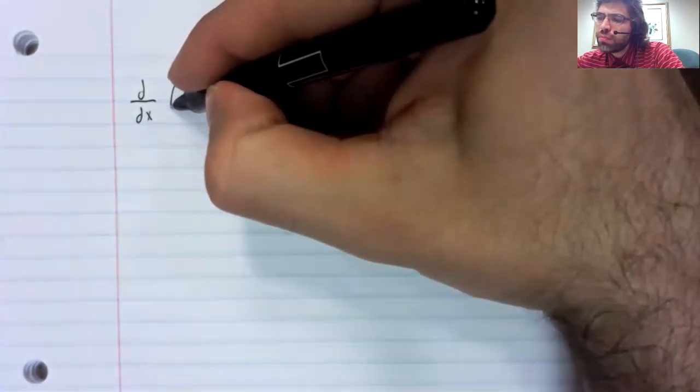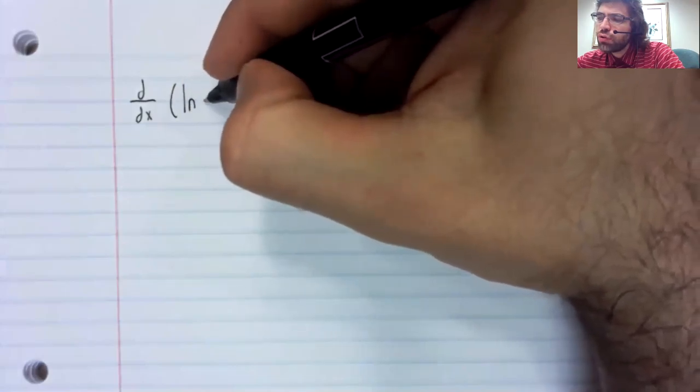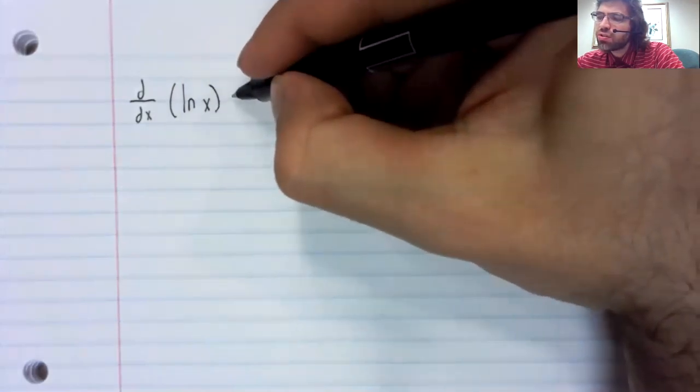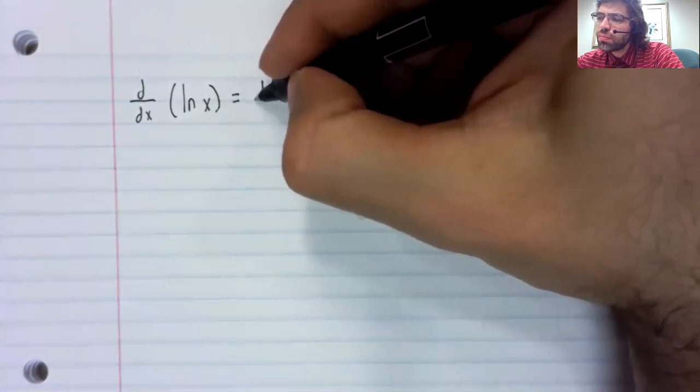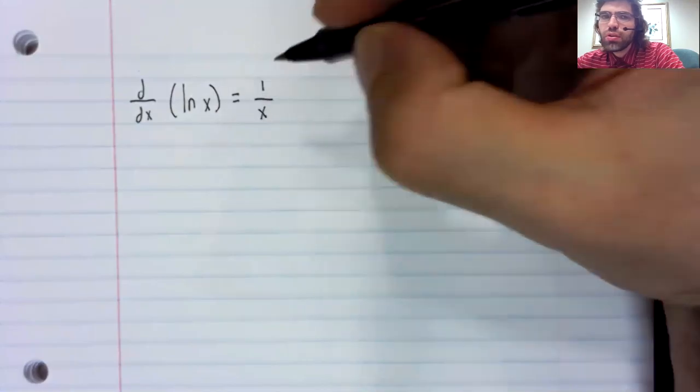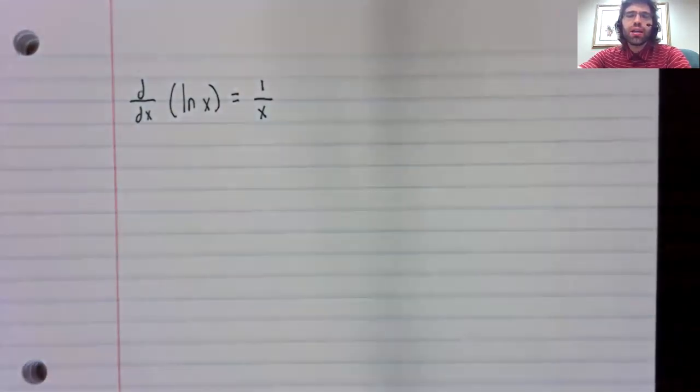Let's learn how to take the derivative of the natural logarithm. And once we've mastered this derivative, we'll see how we can deal with the other logarithms as well. But let me just put the equation down. The derivative of the natural logarithm of x is 1 divided by x.